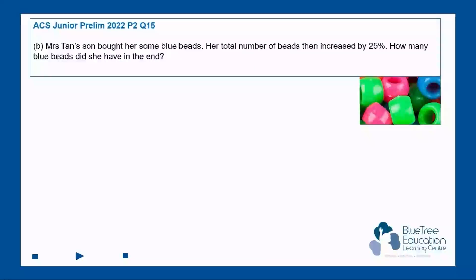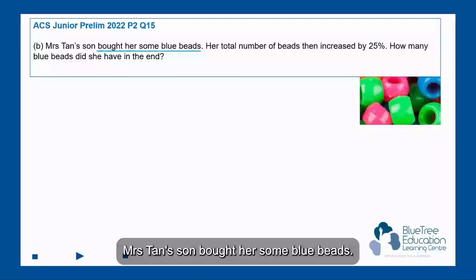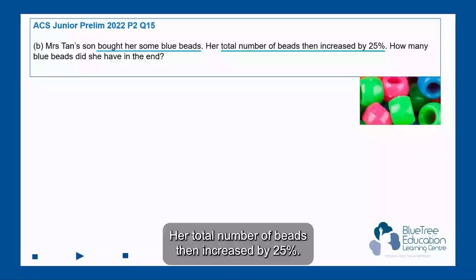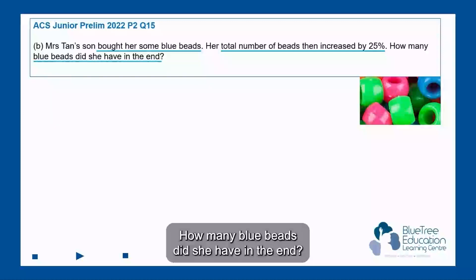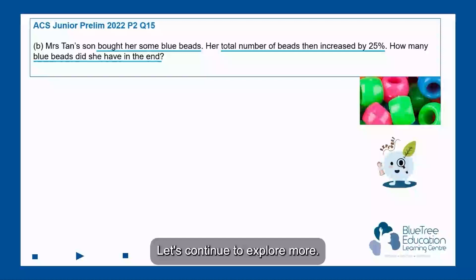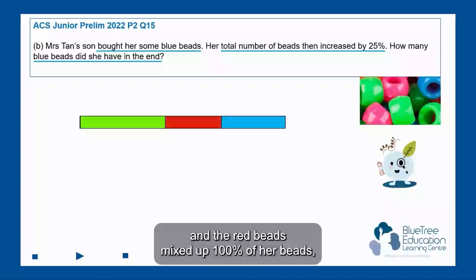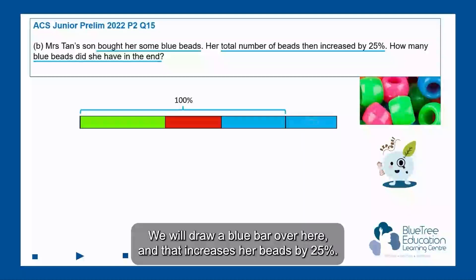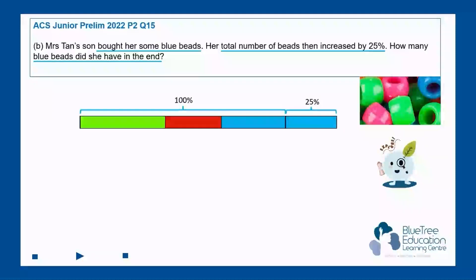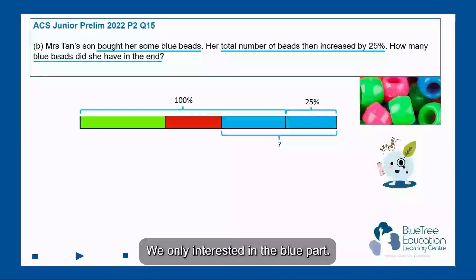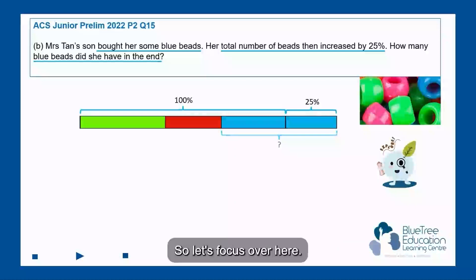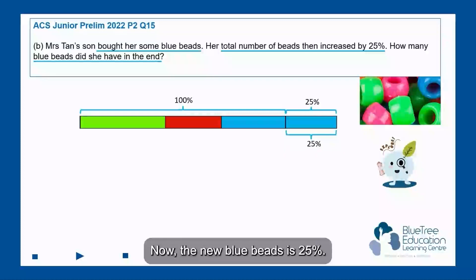Part B: Mrs Tan's son bought her some blue beads and her total number of beads increased by 25%. How many blue beads did she have in the end? From the bar model, the green, blue, and red beads make up 100% of her beads. Since her son bought more blue beads, we draw a blue bar that increases her beads by 25%. The new blue beads is 25% and the previous blue beads is 30%.